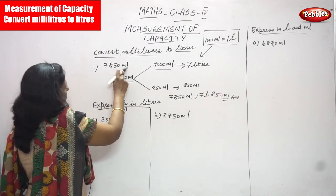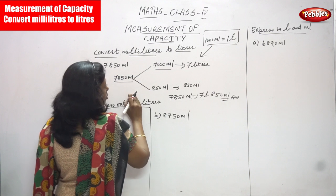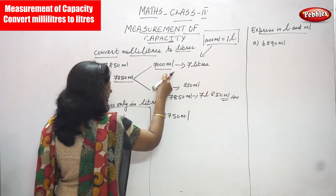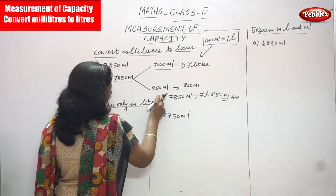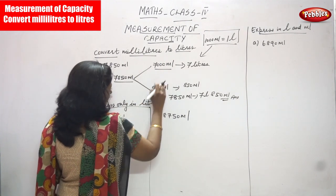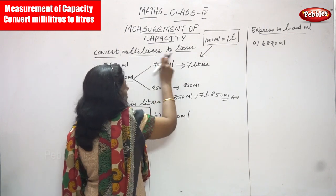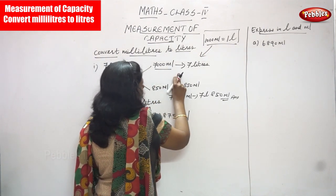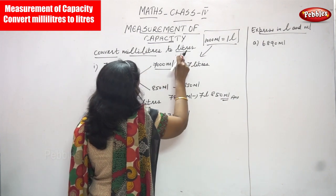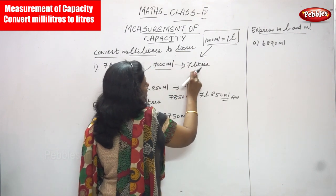7850 milliliters is separated into two parts: 7000 milliliters and 850 milliliters. 7000 milliliters is converted into liters because you have to give the answer in liters.